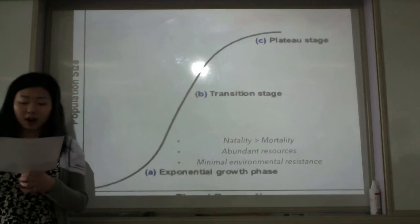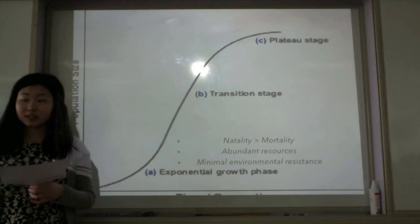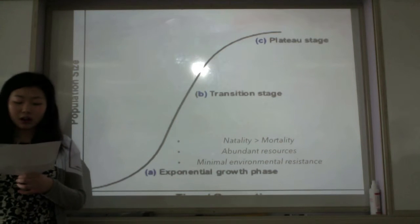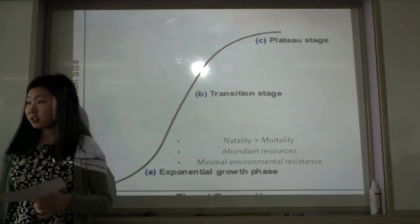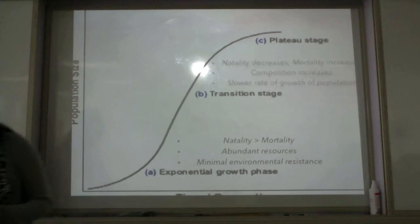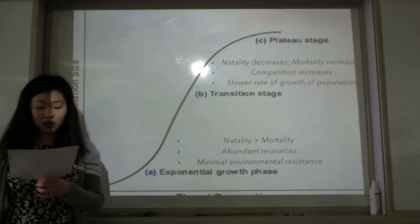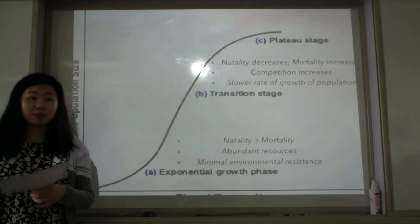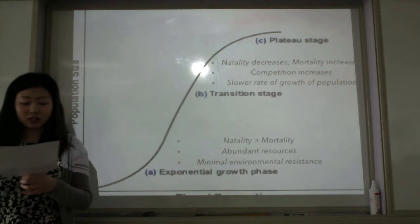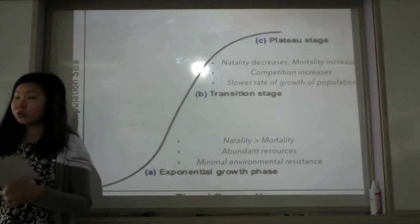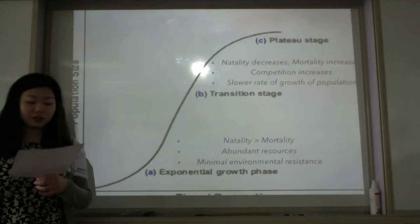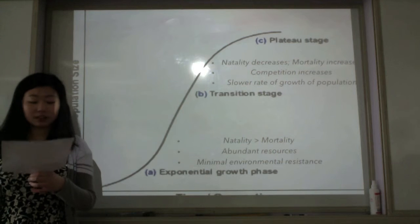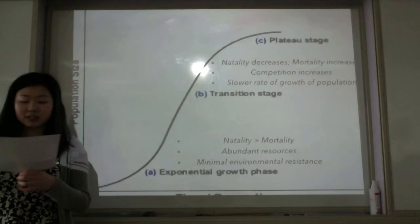There is still abundant resources and minimal environmental resistance. Then as the population continues to grow, growth enters the transitional phase. Due to the fast-rising number of individuals, competition increases due to the decreasing availability of resources. Natality starts to decrease while mortality starts to rise, leading to a slower rate of population growth.